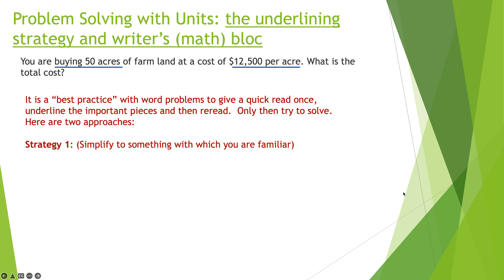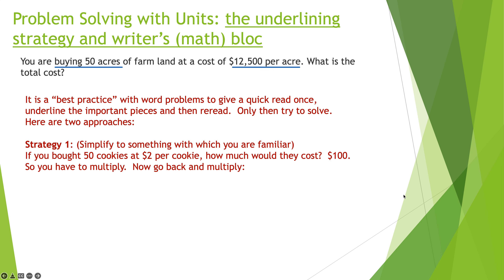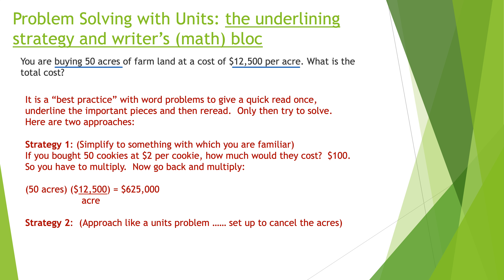Here are two approaches. Strategy one: simplify to something familiar. If you bought 50 cookies at two bucks each, how much would that cost? You'd multiply. So go back and multiply 50 acres times $12,500 per acre — notice the acres cancel out — giving $625,000. Strategy two: approach it like a units problem. Make sure acres appear in both the numerator and denominator so they cancel, leaving only dollars. Either way, the answer is $625,000.